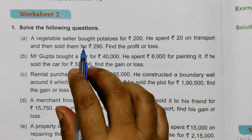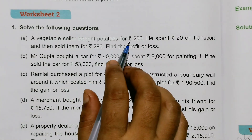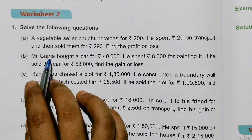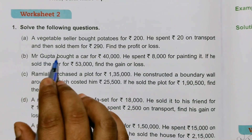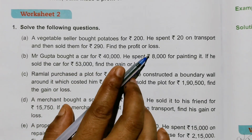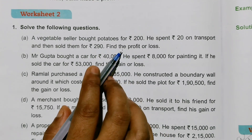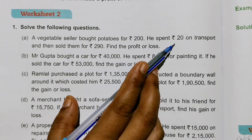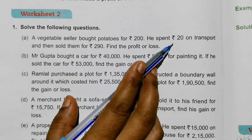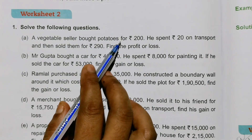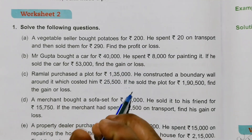Option A: A vegetable seller bought potatoes for 200 rupees. He spent 20 rupees on transport and then sold them for 290 rupees. Find the profit or loss. First we see: cost price of potatoes is 200 rupees and transport charge is 20 rupees. Then we find the actual cost price of potatoes.